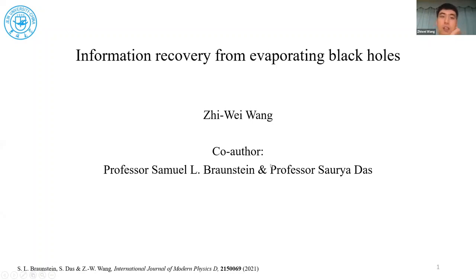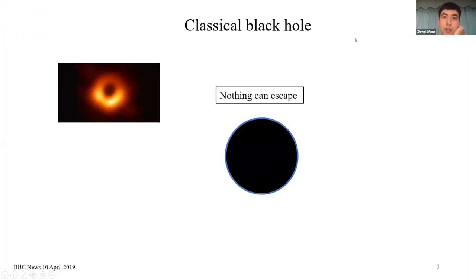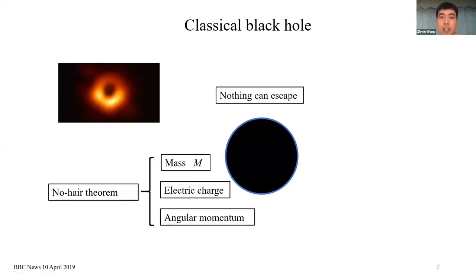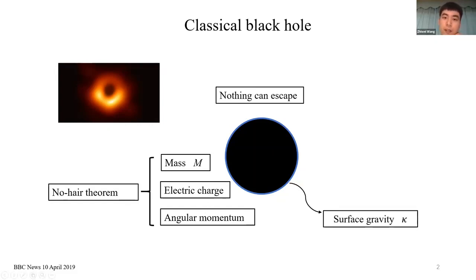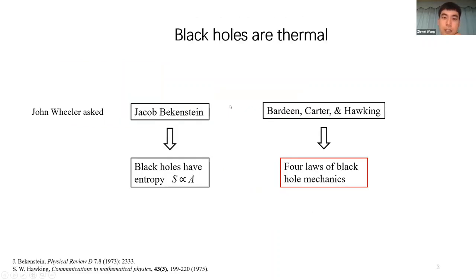The co-author is Professor Samuel Bernstein. Classically, a very simple definition of a black hole is that nothing can escape, if you don't consider Hawking radiation. The no-hair theorem claims that a stationary black hole can always be described by three very simple physics parameters: the mass, the electric charge, and the angular momentum of the black hole. All other properties, like surface gravity or horizon area, can be expressed in terms of these three parameters.